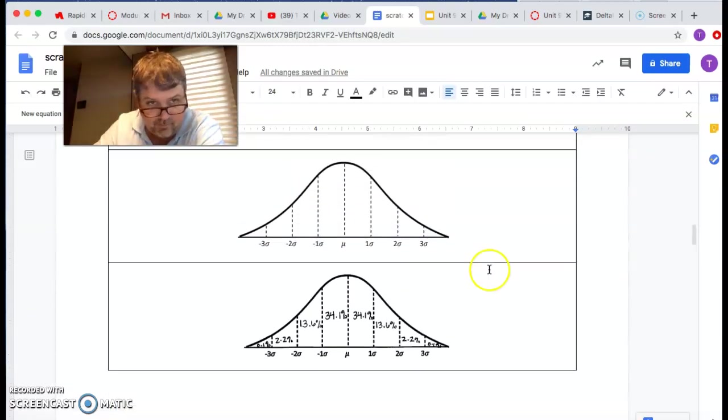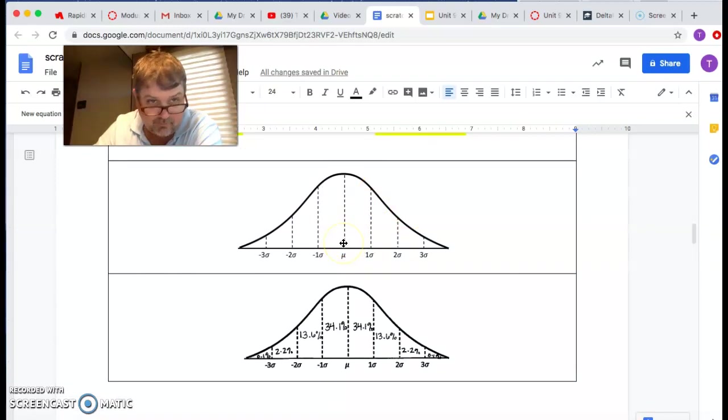So technically this curve goes infinitely in both directions, right, from positive, from mu being 0, it will go to positive infinity, and negative infinity that way. Now of course the area gets really, really small out here, past three standard deviations.